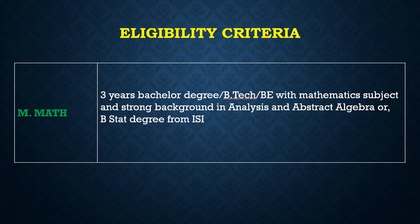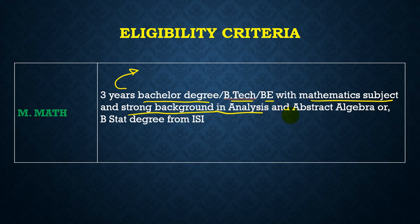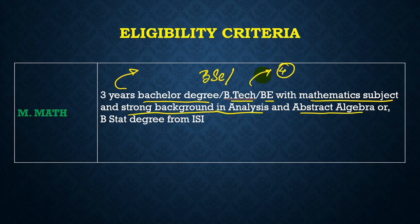The eligibility criteria is basically a three-year bachelor's degree — BSc, BTech, or BE — with mathematics as a subject and a strong background in analysis and abstract algebra. You must have at least a three-year degree, though BTech and BE are usually of four years.